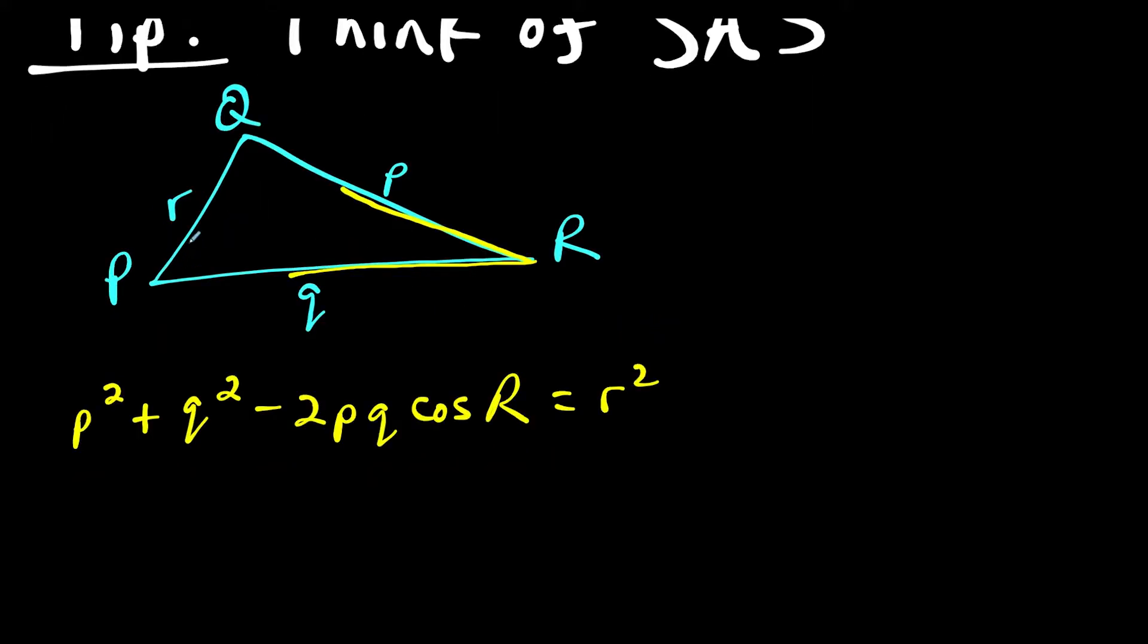But let's say we targeted a different part of the triangle. Let's say we're using side R and side Q. Notice angle P is between those two. So I would have R squared plus Q squared minus 2RQ times cosine of angle P equals side P squared.